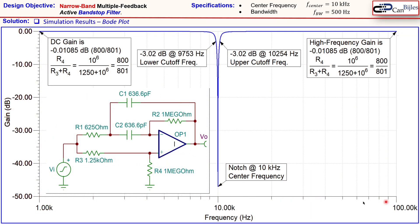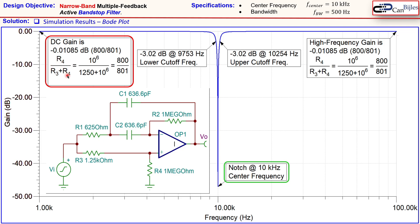Looking at the Bode plot simulation results on a logarithmic frequency scale: the notch frequency shows a sharp dip at exactly 10 kHz — our intended center frequency. The DC gain is approximately −0.01 dB, corresponding to K = R4/(R3 + R4) = 1,000,000 / (1,250 + 1,000,000) = 800/801, which converts to very close to −0.01 dB. The high-frequency gain gives the exact same result.